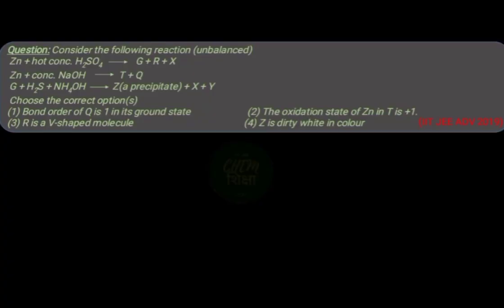In this question, three chemical equations are given with some missing reactants and products, and we have to complete these equations and choose the correct options regarding these missing components. This question was asked in IIT JEE Advanced 2019.